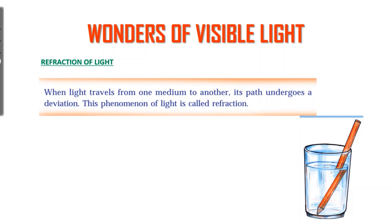We start with refraction of light. When light travels from one medium to another, its path undergoes a deviation. This phenomenon is called refraction. One question: how can we see that a pencil is bent when it is put in a glass of water? Due to refraction, we can see that the image appears bent.